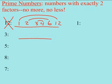Let's try 3. Again, factor rainbow. 1 times 3. Does 2 go into 3? No. My factor rainbow is done. I have exactly two factors, so I know 3 is prime.